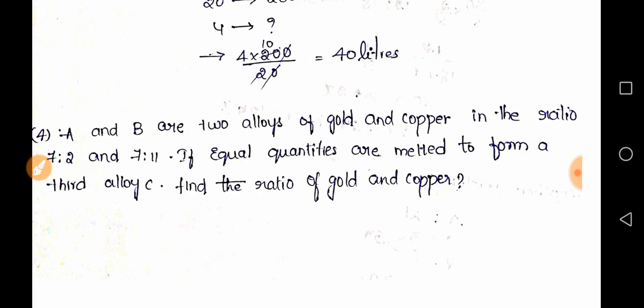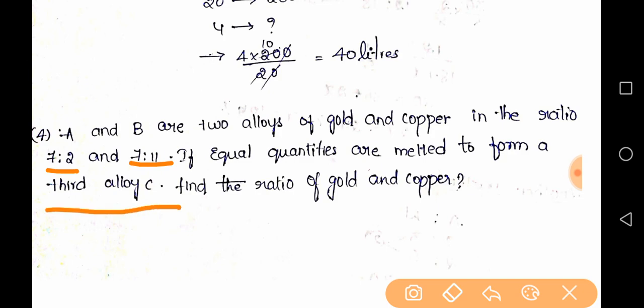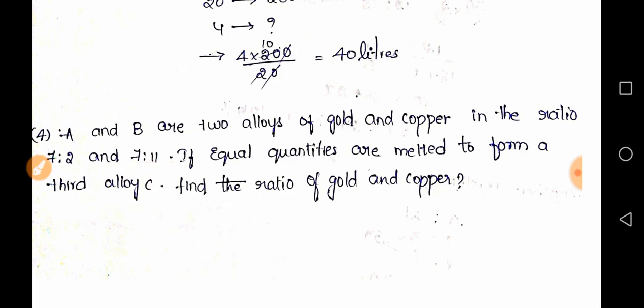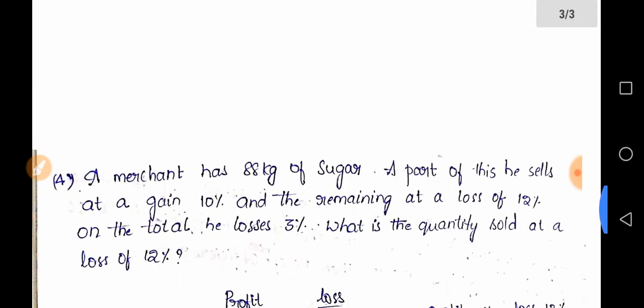Another problem: A and B are two alloys of gold and copper in the ratio 7:2 and 7:11 respectively. If equal quantities are melted to form a third alloy C, find the ratio of gold to copper. Try this one and give the answer in the comments — I'll solve it in the next video.